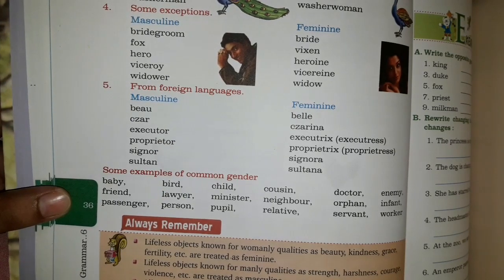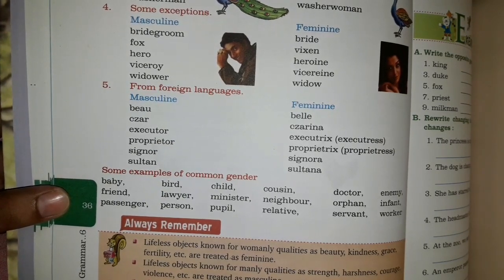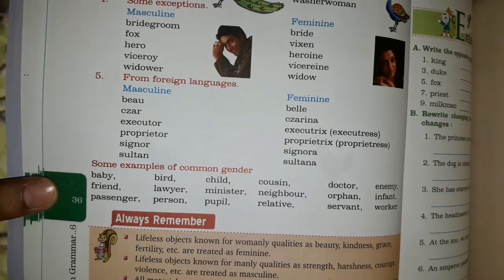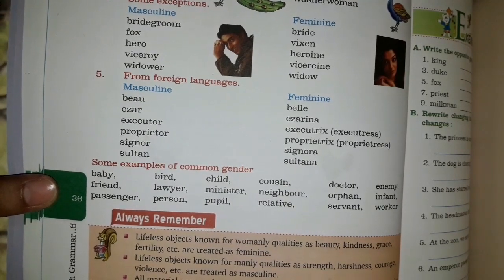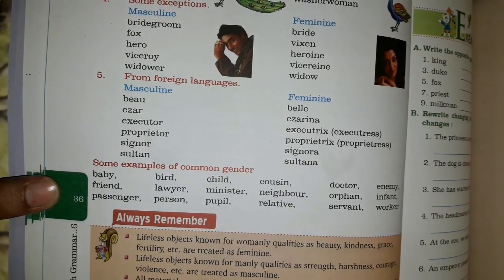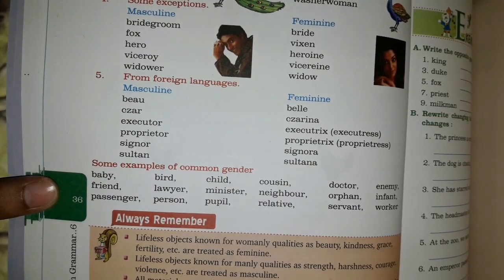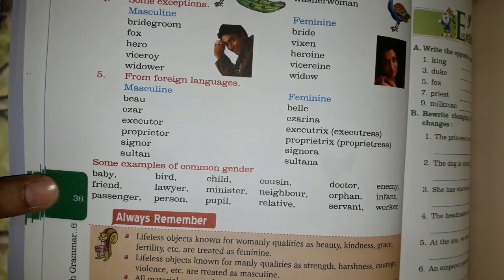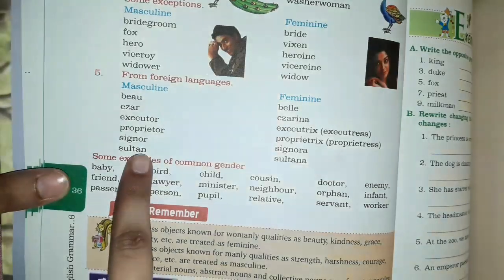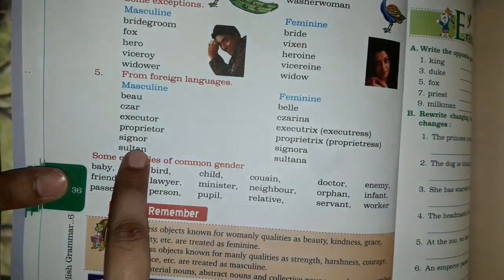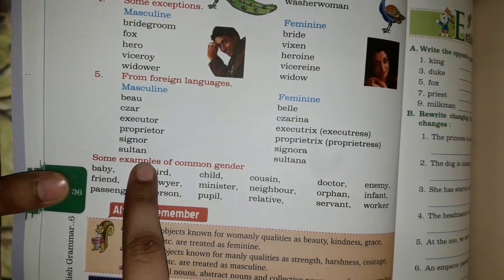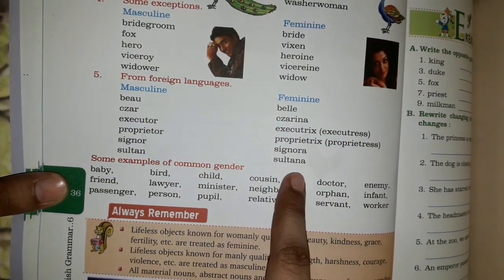Fifth, there are certain words taken from foreign languages. The first one is pronounced 'beau' and the feminine is 'belle'. Second, 'czar' and the feminine is 'czarina'. Also: 'signor' becomes 'signora', and 'sultan' becomes 'sultana'.